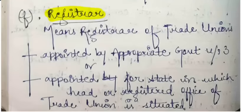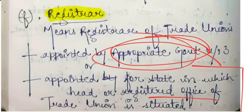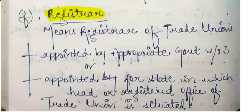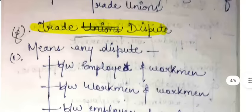Section 2(f) defines 'registrar' as the registrar of trade unions appointed by the appropriate government for each state in which the head or registered office is situated. The term registrar also includes additional or deputy registrars of the trade union.